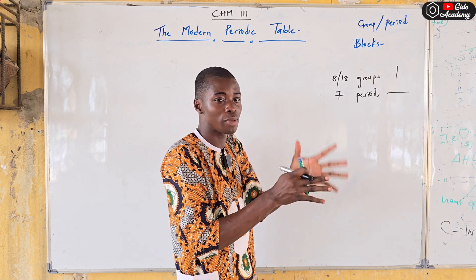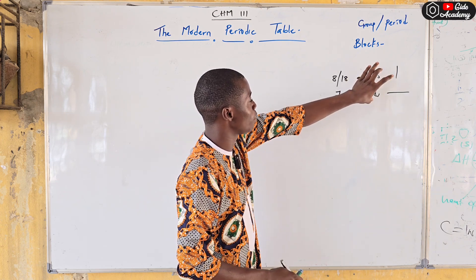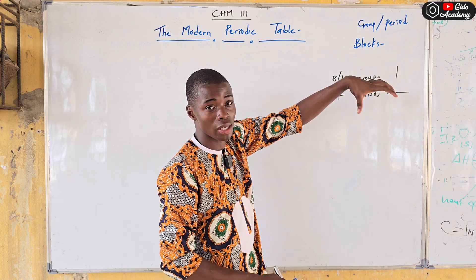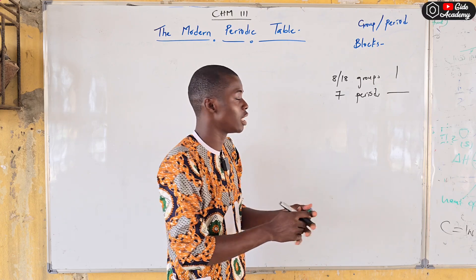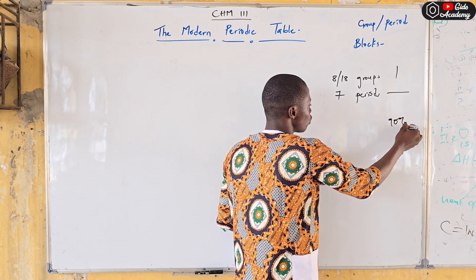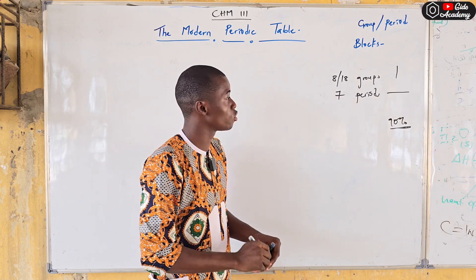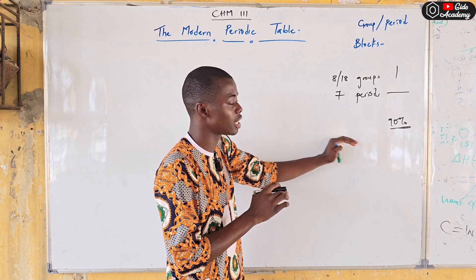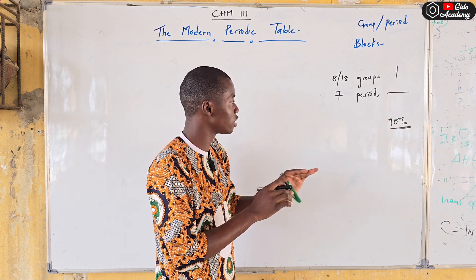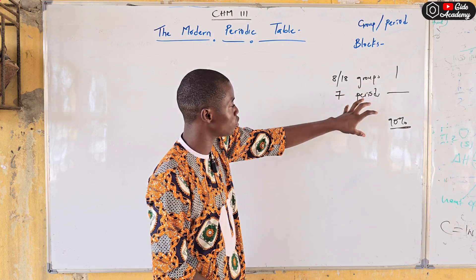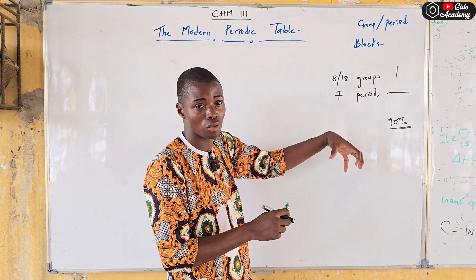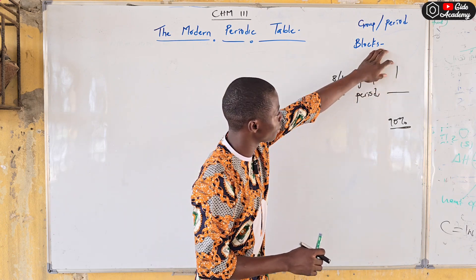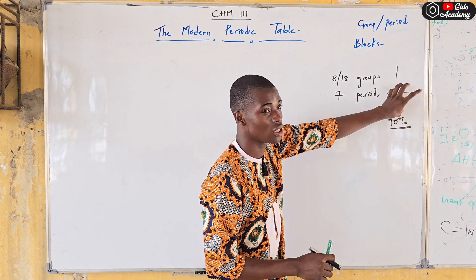Elements that belong to the same period share the same principal quantum number (same energy level/shell). Elements that belong to the same group have the same physicochemical properties — there is about a 90% chance they will undergo the same reaction, if not 100%. Their reactivity and behavior are essentially the same.